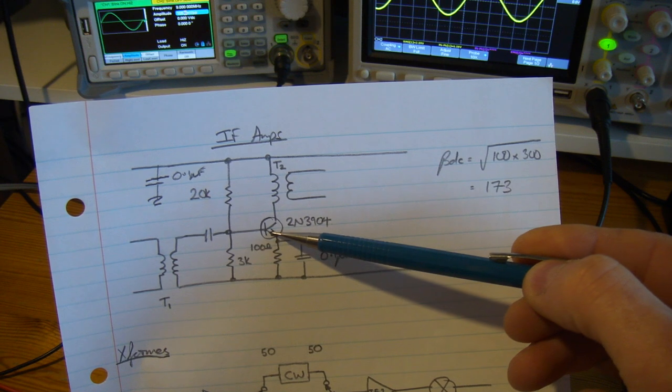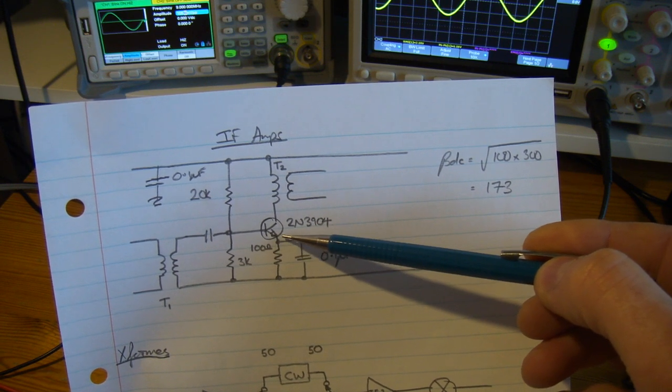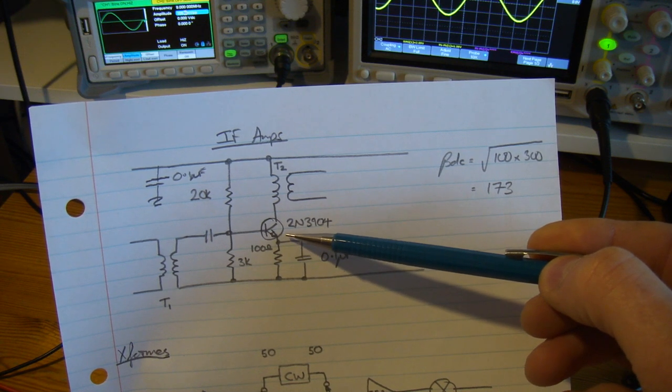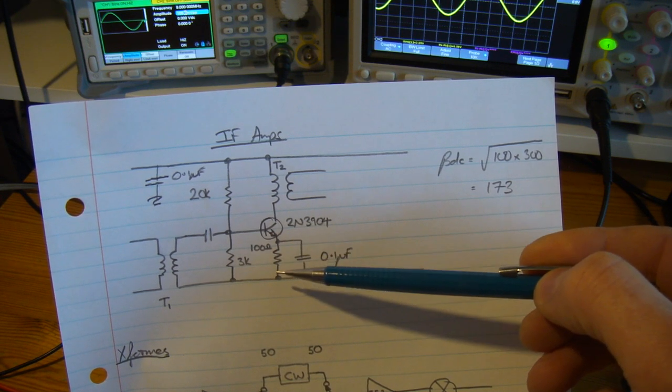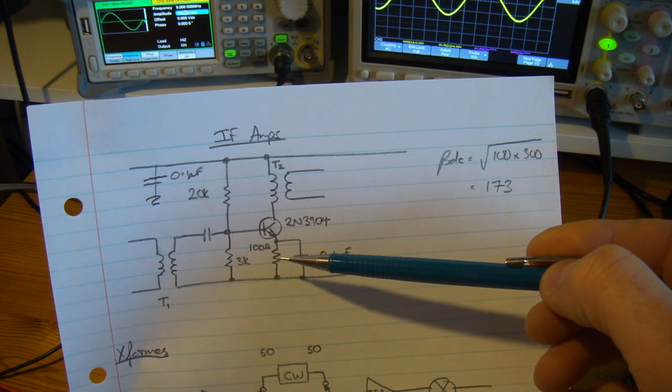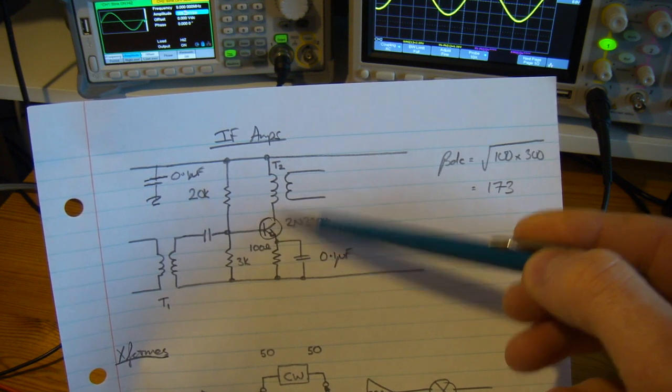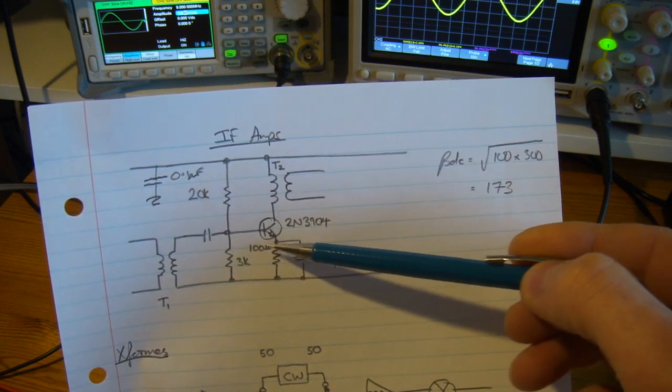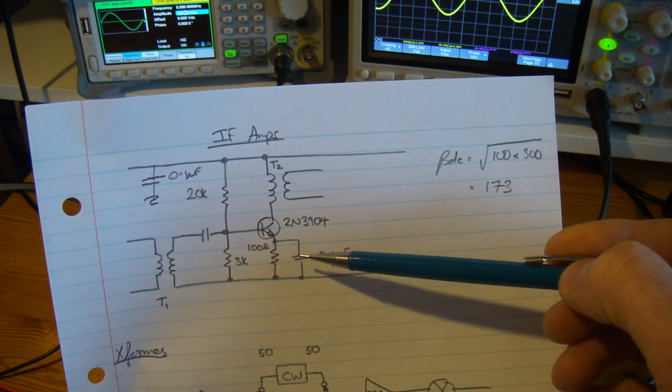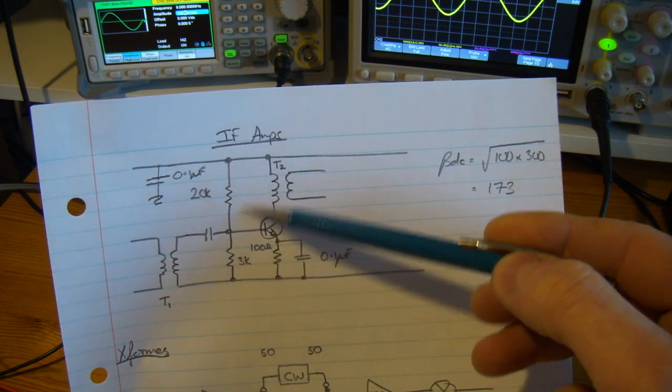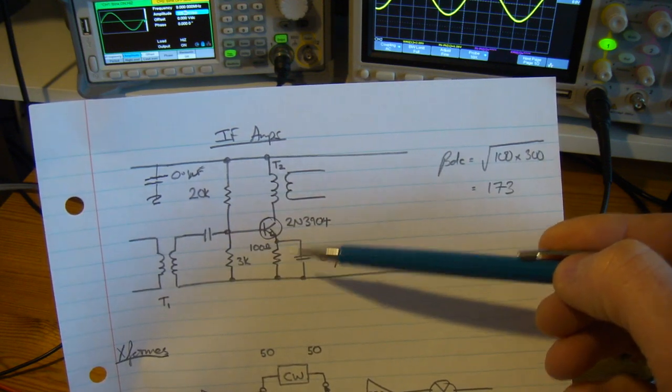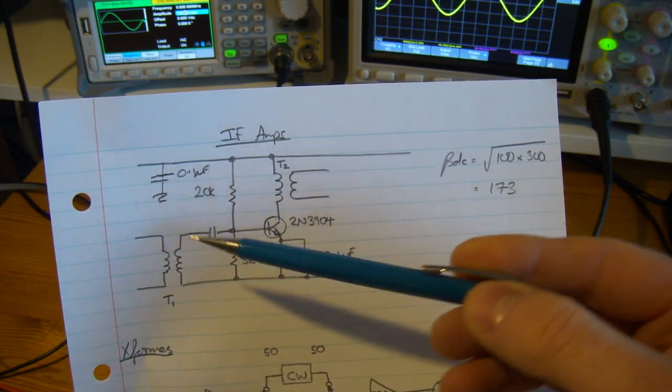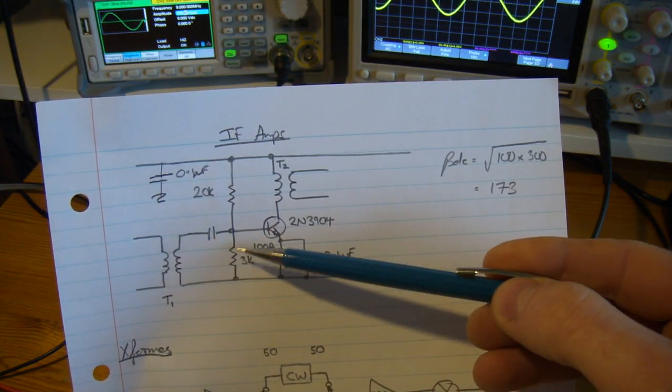Coming through here would be beta AC divided by our frequency of operation times little re plus big re. Little re is 26 divided by our emitter current in milliamps, so 26 divided by 10 equals 2.6 plus our emitter resistor. In this case the emitter resistor is fully bypassed so that equals zero. That's what I've traditionally done in the past, and if you look at some previous videos and on the blog you'll see those calculations.